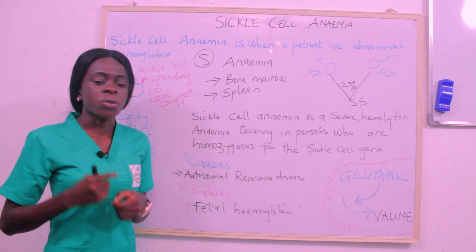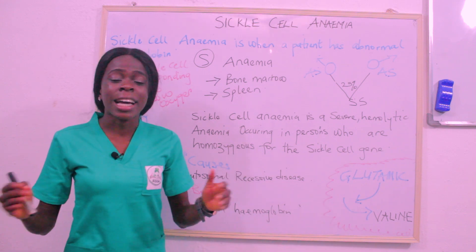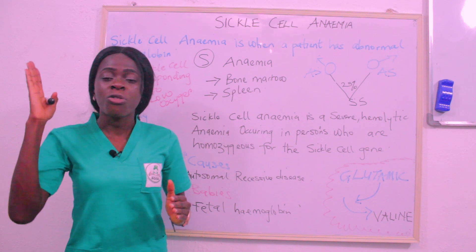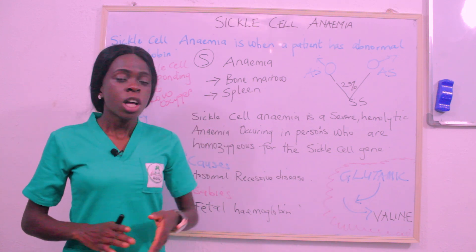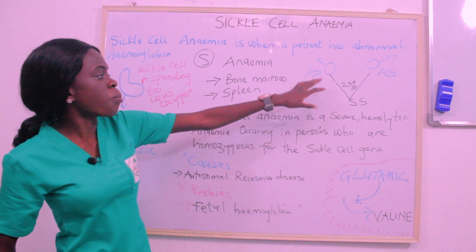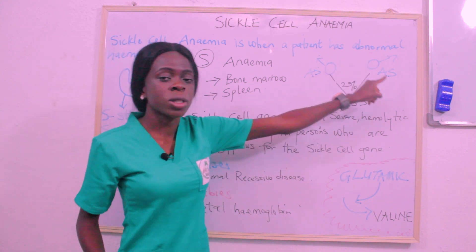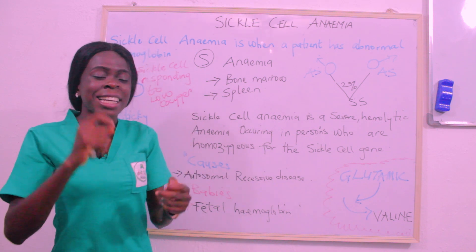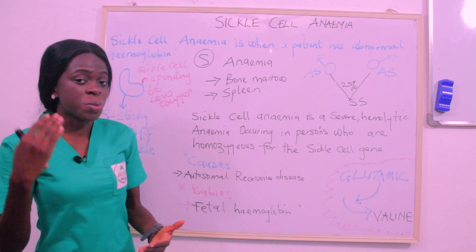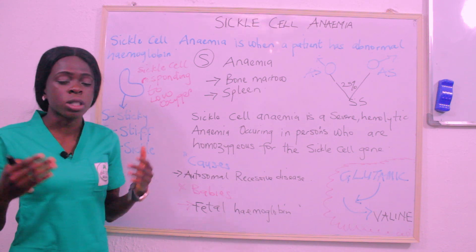In terms of the cause of sickle cell anemia, sickle cell anemia is an autosomal recessive disease. It cannot be caused by weather, neither can it be caused by a virus. It is actually caused when a child inherits the abnormal hemoglobin from both parents. That is why there is a campaign that AS should not marry AS, because when AS comes in contact with AS, there is a 25% chance that they are going to give birth to a child with SS. For the child to be sickle cell anemic, they must inherit the sickle cell gene from both parents.